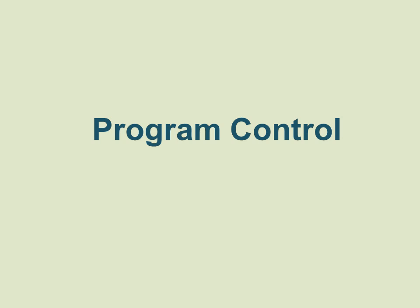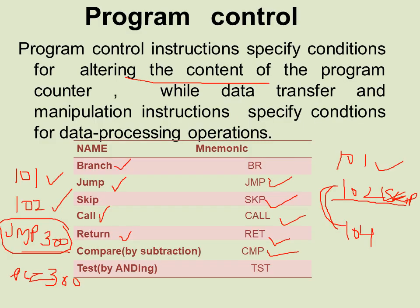Hello students. In this video we will discuss program control instructions. Instructions are always stored in successive memory locations. When processed in CPU, the instructions are fetched from consecutive memory locations and executed.